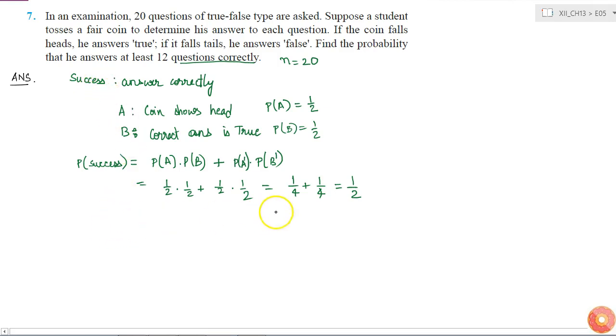Okay. So now I got the probability of success. I'll call this as P. This means that Q is also half, which is the probability of failure. And I have got N.